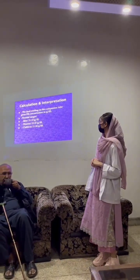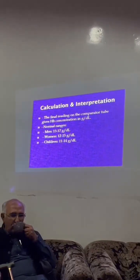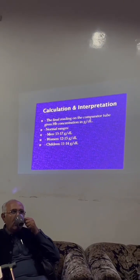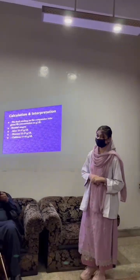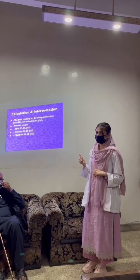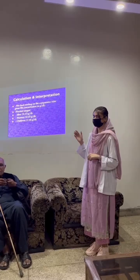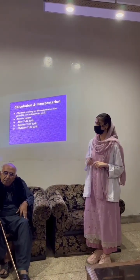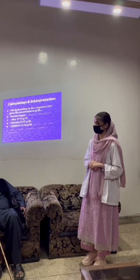The final reading from the comparator tube gives the hemoglobin concentration in gram per deciliter. The normal ranges are: in men, 13 to 17 gram per deciliter; in women, 12 to 15 gram per deciliter; and in children, 11 to 14 gram per deciliter.